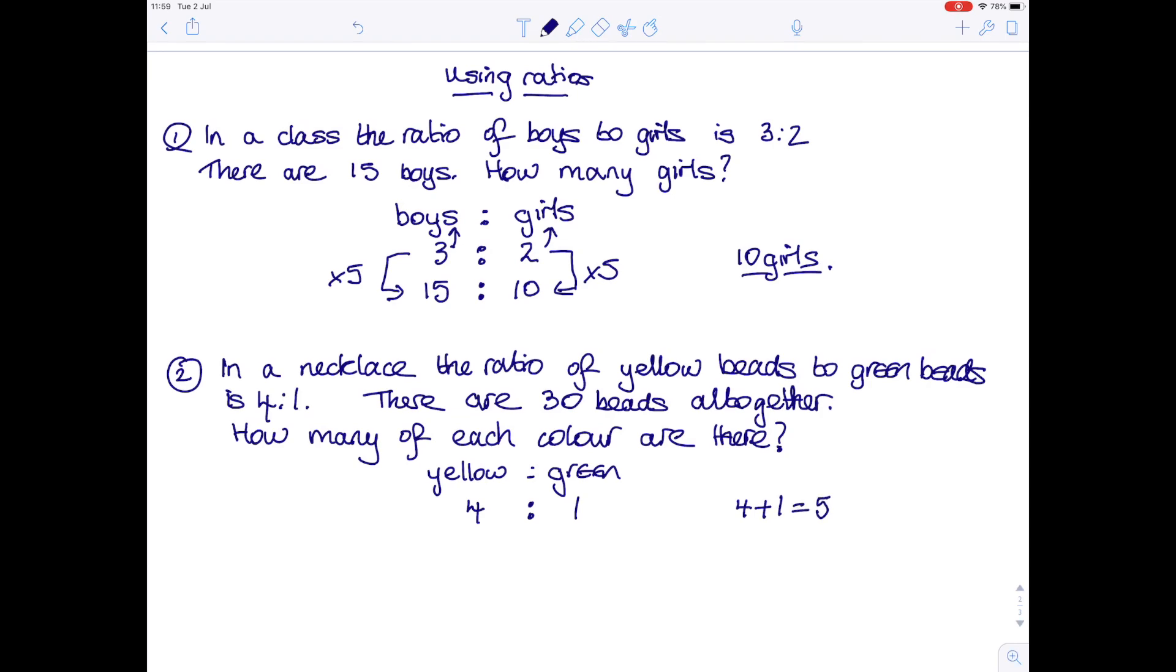If you add these two numbers together, 4 plus 1, you get 5. So the beads can be thought of as being in groups of 5. The 30 beads that we are told we have need to be thought of as being in groups of 5, so there are 6 groups altogether.